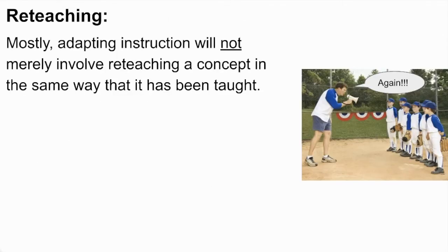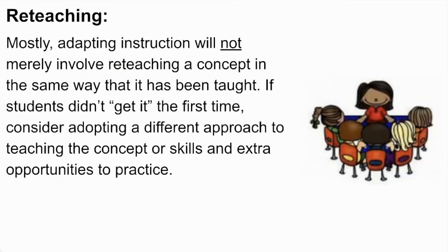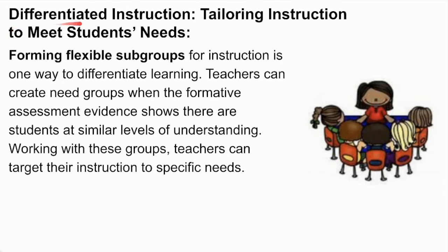Unfortunately, one of the most common approaches when students need extra support is to simply reteach — to show students the exact same thing one more time. We need to understand that adapting instruction will not just involve reteaching a concept in the same way. Instead, if students don't get it right the first time, we should consider adopting a different approach to teaching the concept or skills, with extra opportunities to practice. Instruction takes place in a different way, often in a different or smaller setting. This is when differentiated instruction becomes so important — tailoring our instruction to help meet our students' needs.